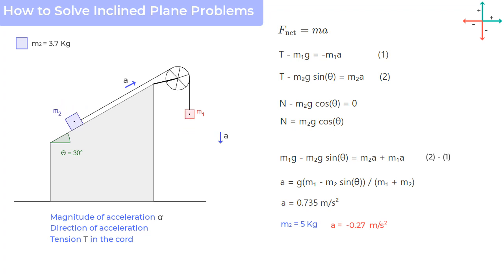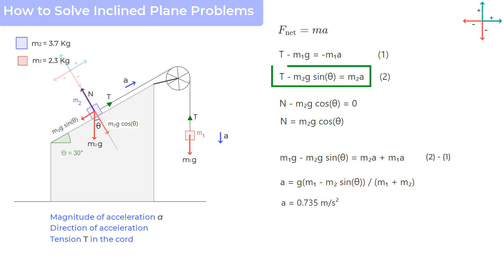Okay, now we know the acceleration. So we can find the value of T as T is equal to m2a plus m2g sin theta. Again, when you put in the value of m2, a, and theta, what you get is 20.8 Newtons.